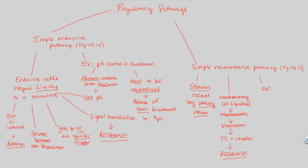A good example of the simple neuroendocrine pathway is the regulation of milk release. For lactating mammals, milk release is regulated via a simple neuroendocrine pathway involving a specific neurohormone related to lactation and milk release.